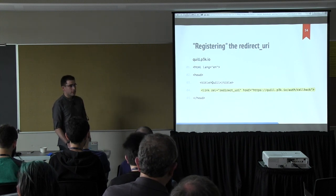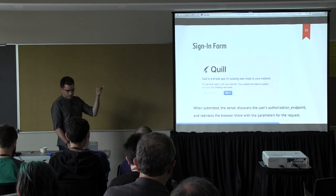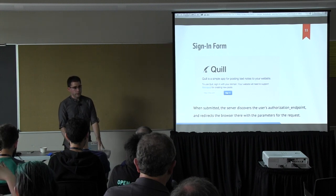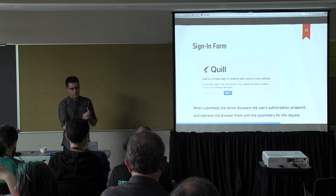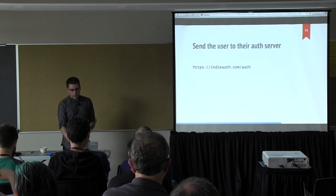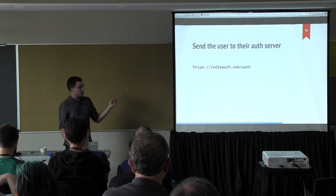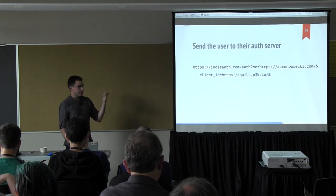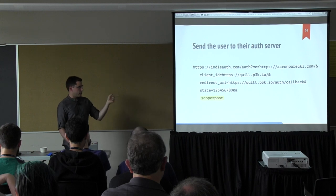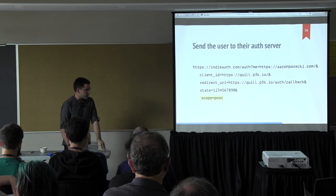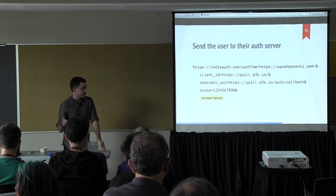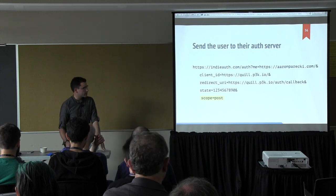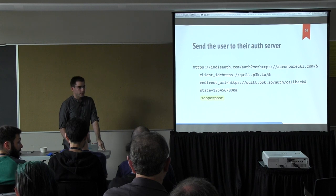To declare these endpoints as part of my site, I edit my source code on aaronparecki.com and add two new link tags: one pointing to a token endpoint and one to the micropub endpoint. The Quill app registers its redirect URL on its web page too. Now when I hit the sign-in form and type in aaronparecki.com, the app looks for those three tags and then attempts to get authorization from me. It finds that indieauth.com is my authorization server and builds up the authorization URL — putting my URL, its client ID, its redirect URI, a state parameter. And a new thing here is scope.